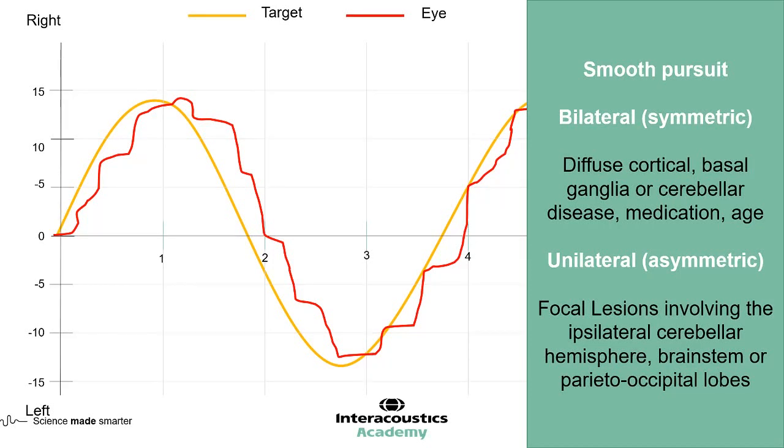Lesions that are bilateral identify within the central nervous system, often diffuse cortical changes, basal ganglia changes, and cerebellar disease.